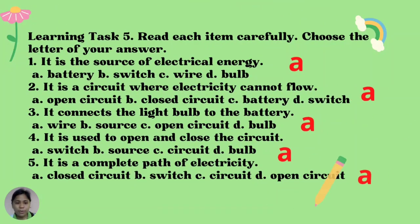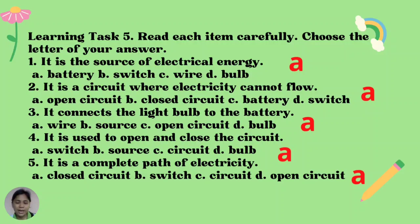These are the correct answers. Number 1: A, battery. Number 2: A, open circuit. Number 3: A, wire. Number 4: A, switch. And number 5: A, closed circuit. And that ends our lesson for week 4 of our science class.